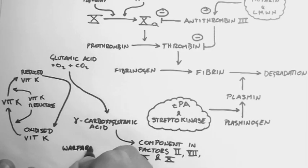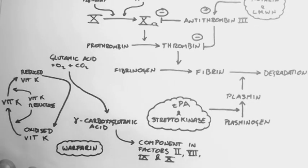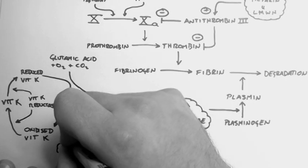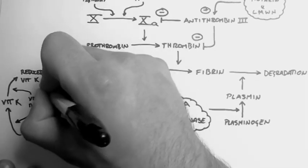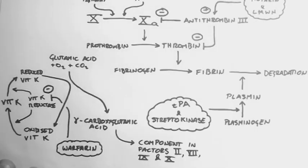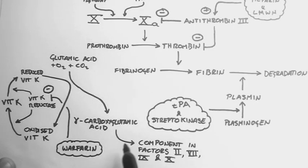Now a very commonly used drug called warfarin is a vitamin K reductase inhibitor. Therefore no reduced vitamin K is produced, and no gamma-carboxyglutamic acid is produced. Therefore factors 2, 7, 9, and 10 can't be produced, and the coagulation cascade doesn't work.